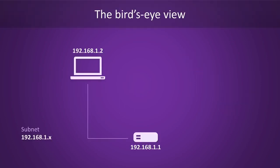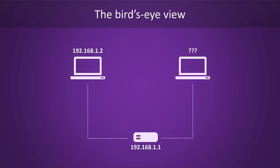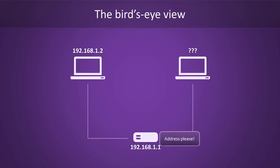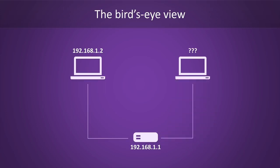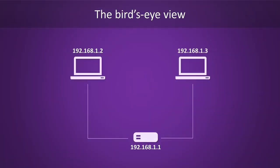Instead of keeping track of all those IP addresses manually, why not let DHCP do all the math for you? Before we cover the technicalities of the algorithm, here's the simpler bird's eye view. The second computer has just joined the network — it doesn't have an IP address but it wants one. First, our new host will send a message asking for an IP address. The router will respond with an offer. The new host will accept the offer, and finally, the router will confirm that the IP address is now assigned to the host. From this point forward, it is known as 192.168.1.3.